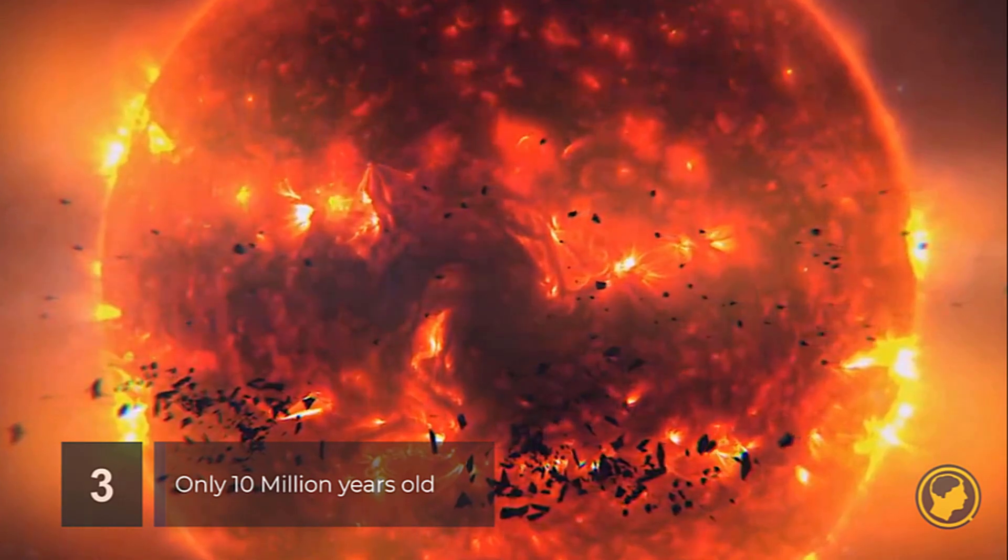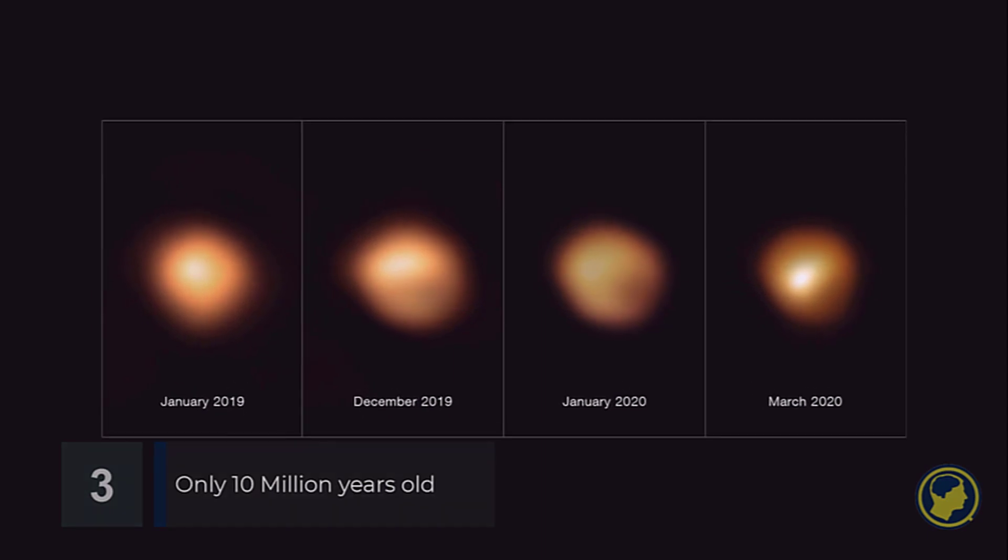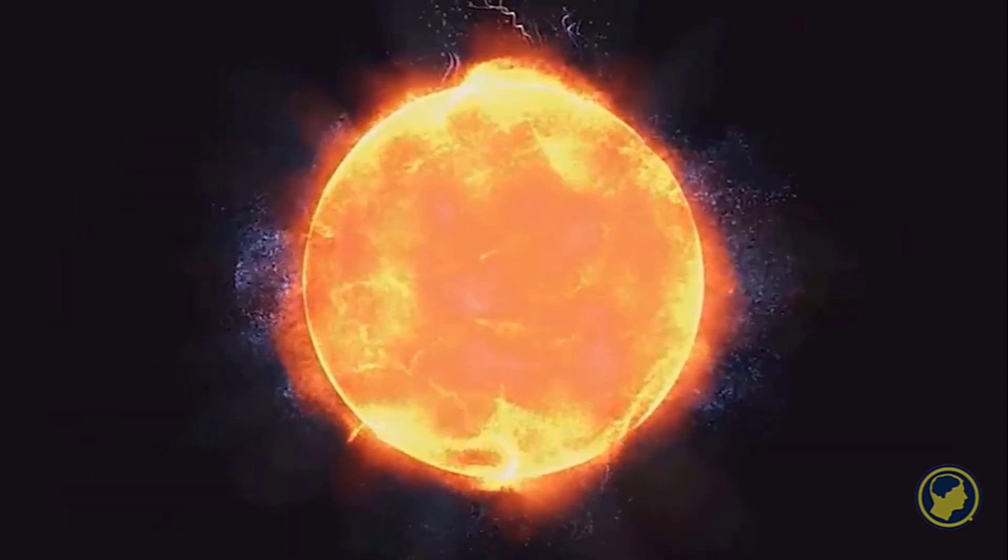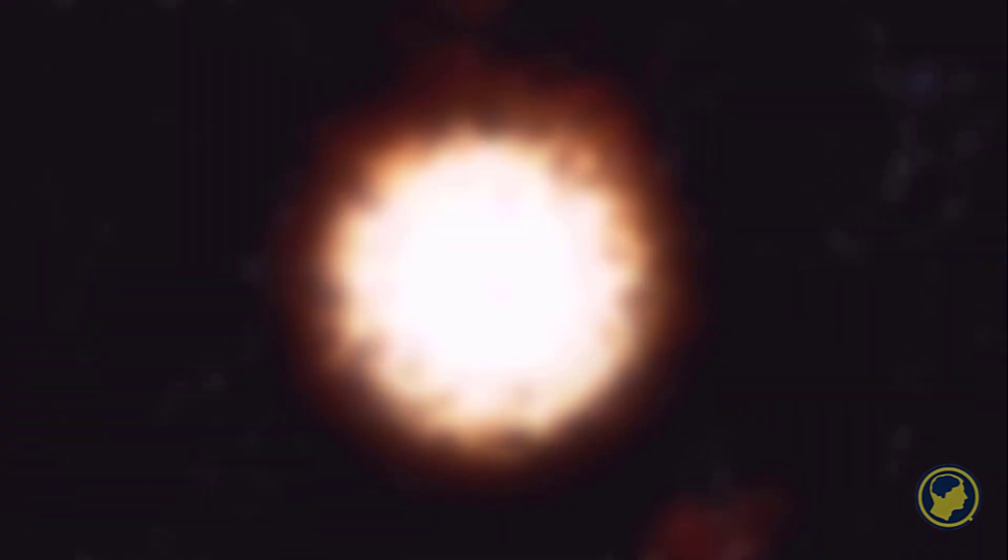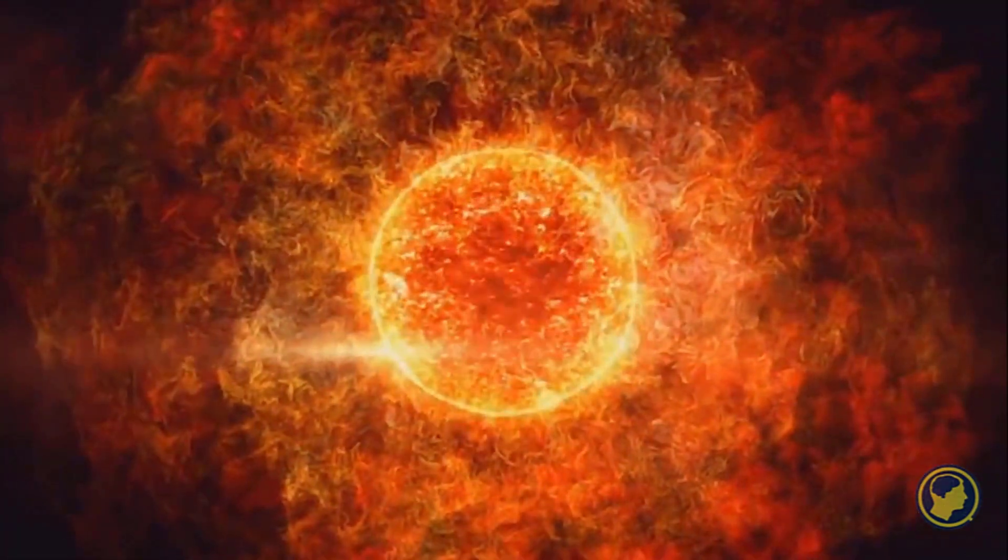Massive stars usually burn through their fuel much faster than other stars and are therefore extremely short-lived. At just 10 million years of age, Betelgeuse is already quite old for a supergiant, and is nearing the end of its life.